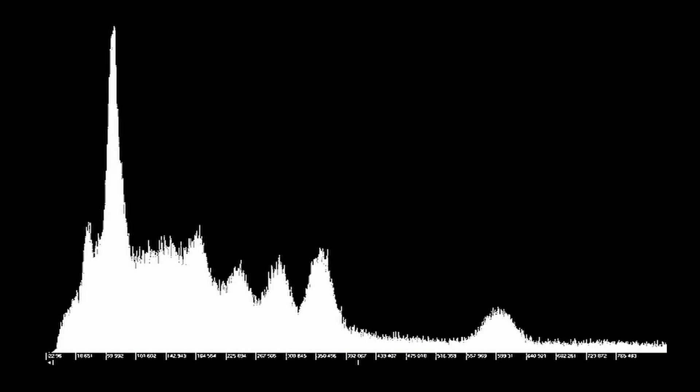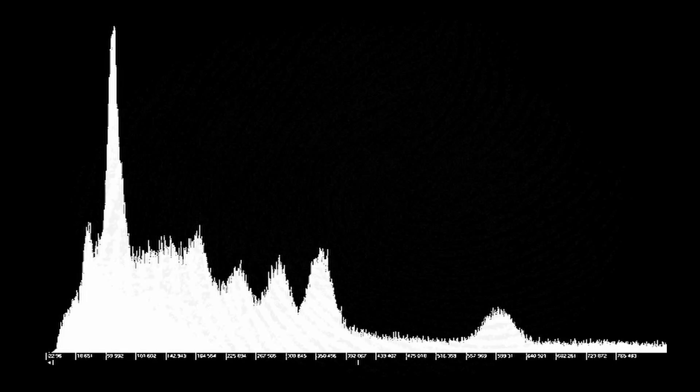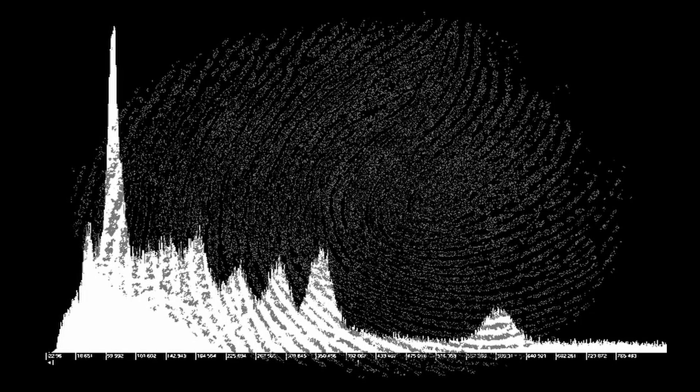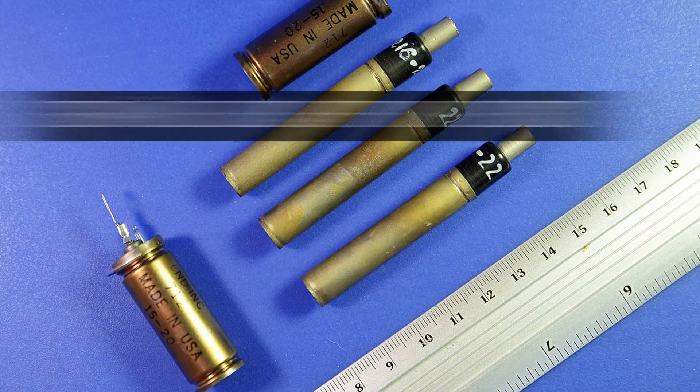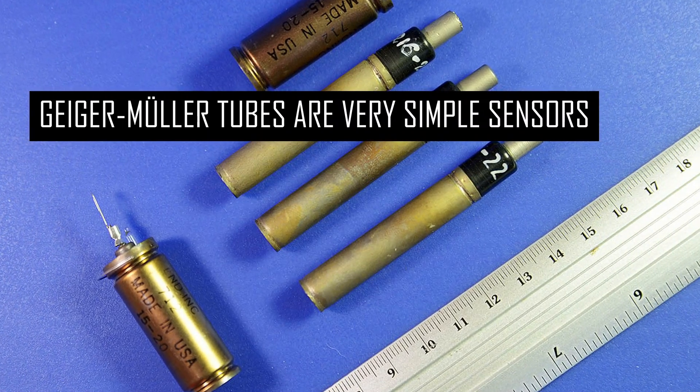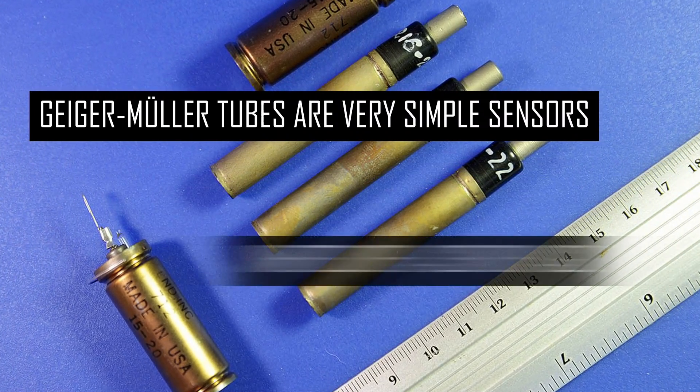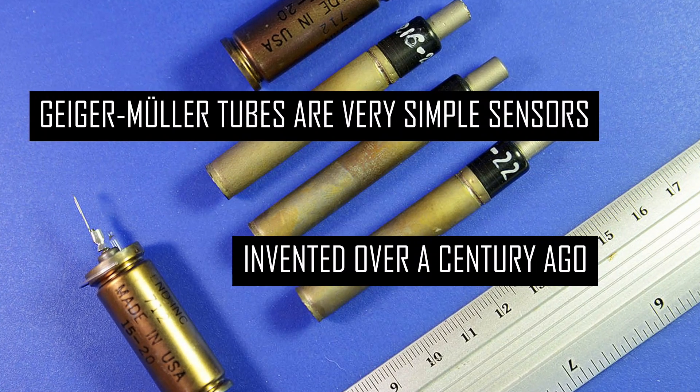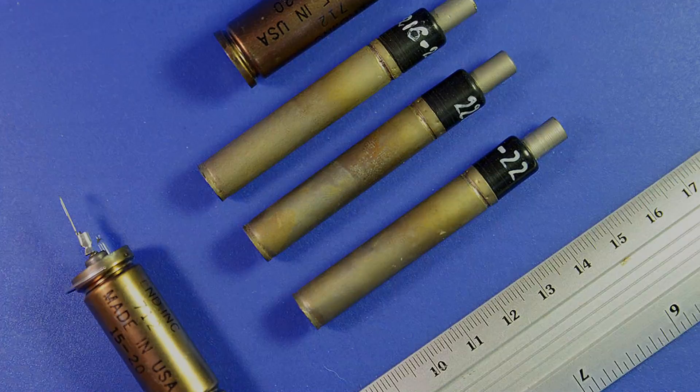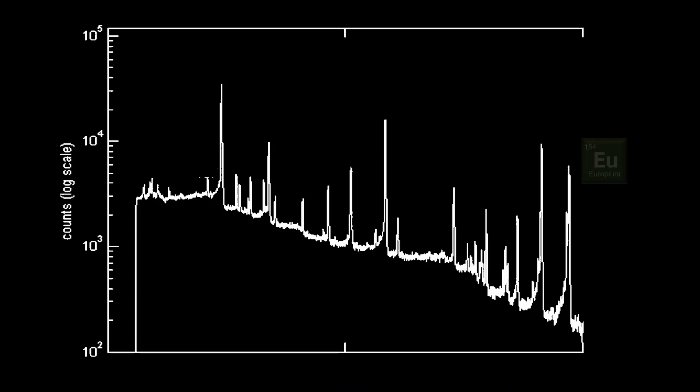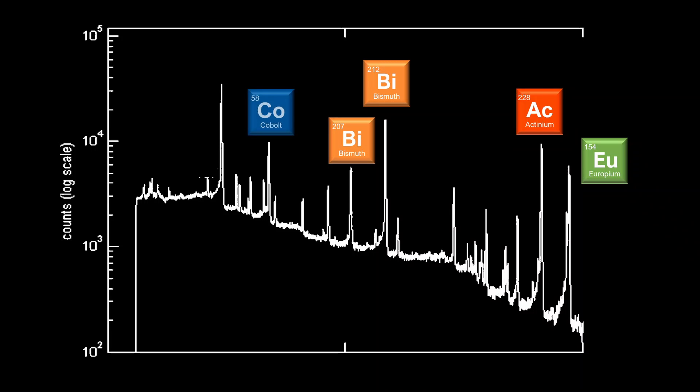Because a spectrometer knows not only how many gamma rays it has detected, but also the energy level of each one, it can construct a fingerprint of the radiation it is exposed to. A Geiger counter, for example, can only count how many rays it has detected and obtains no information about the actual energy levels involved. Being able to create a fingerprint of the spectrum of the radiation means that a gamma-ray spectrometer can actually identify the radioactive materials that it is exposed to.